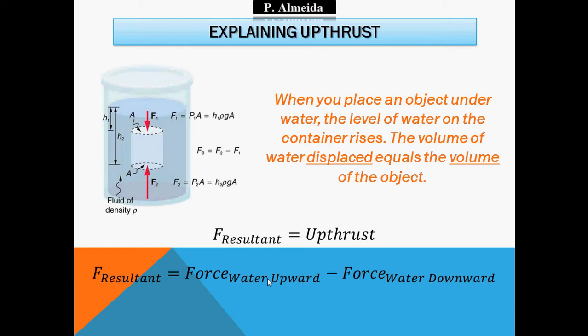This is actually how you can measure the density of irregular shapes — you can figure out the volume by placing the object under water and collecting the displaced water in a measuring cylinder. Density is mass over volume: you get the volume from the displaced water, the mass from a measuring scale, and then you do mass over volume. FB is the buoyant force, equal to the resultant of F1 trying to pull the object down and F2 trying to make the object float.